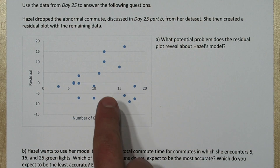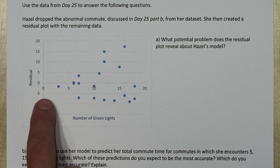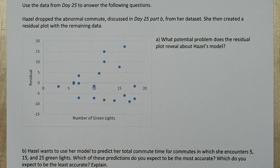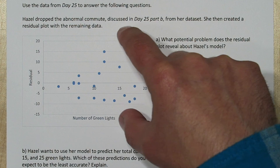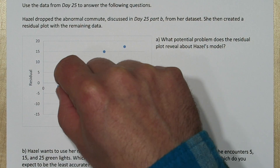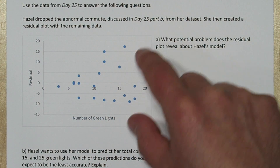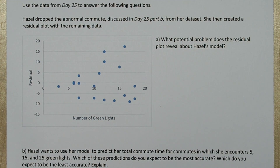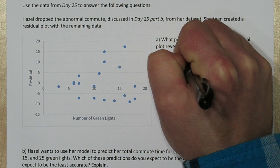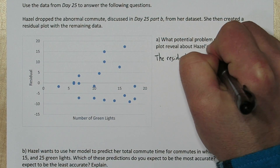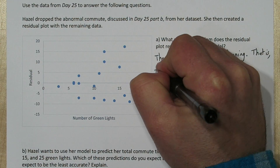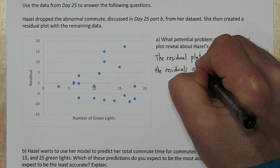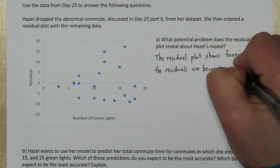There's a pattern in this residual plot. As we look from left to right, we can see the magnitude of the residuals is increasing. This is called fanning, and it's a problem. So we'll write: the residual plot shows fanning.